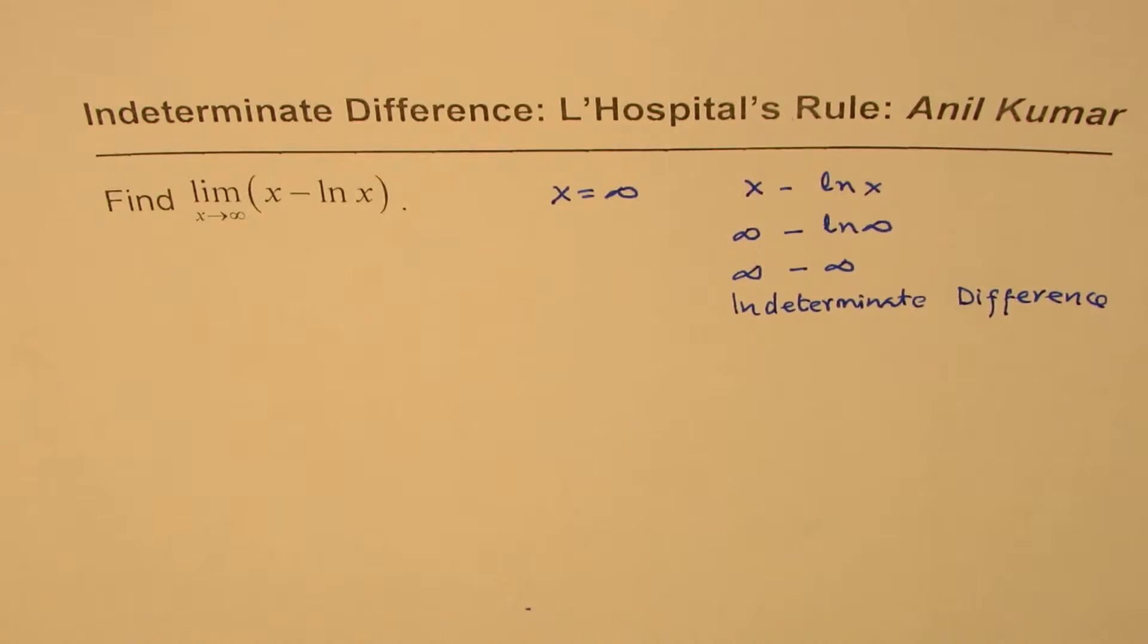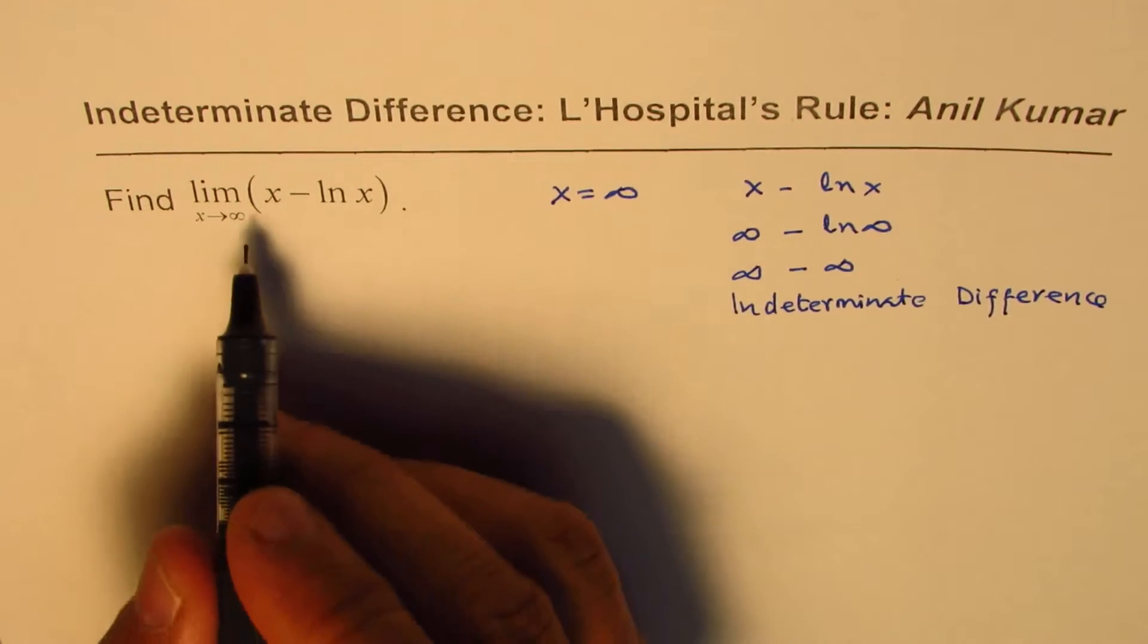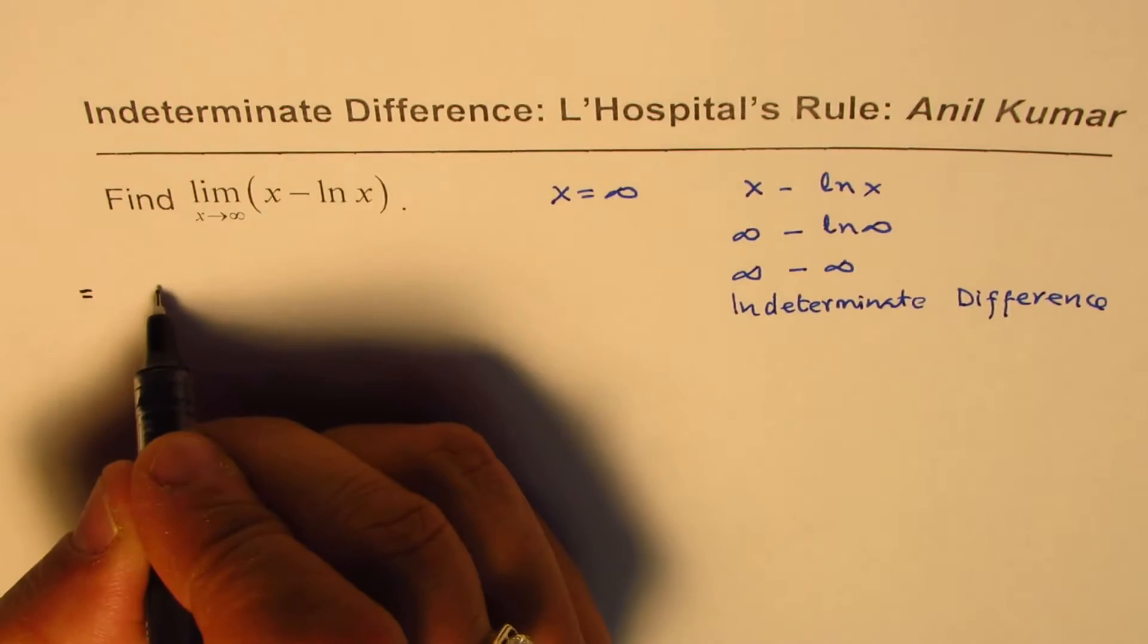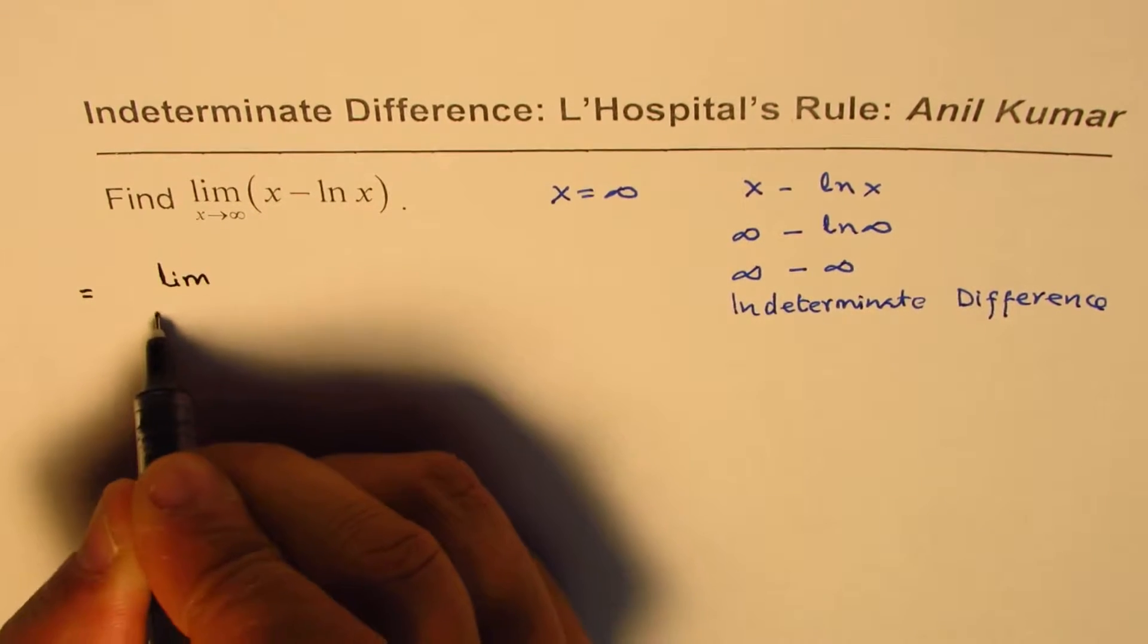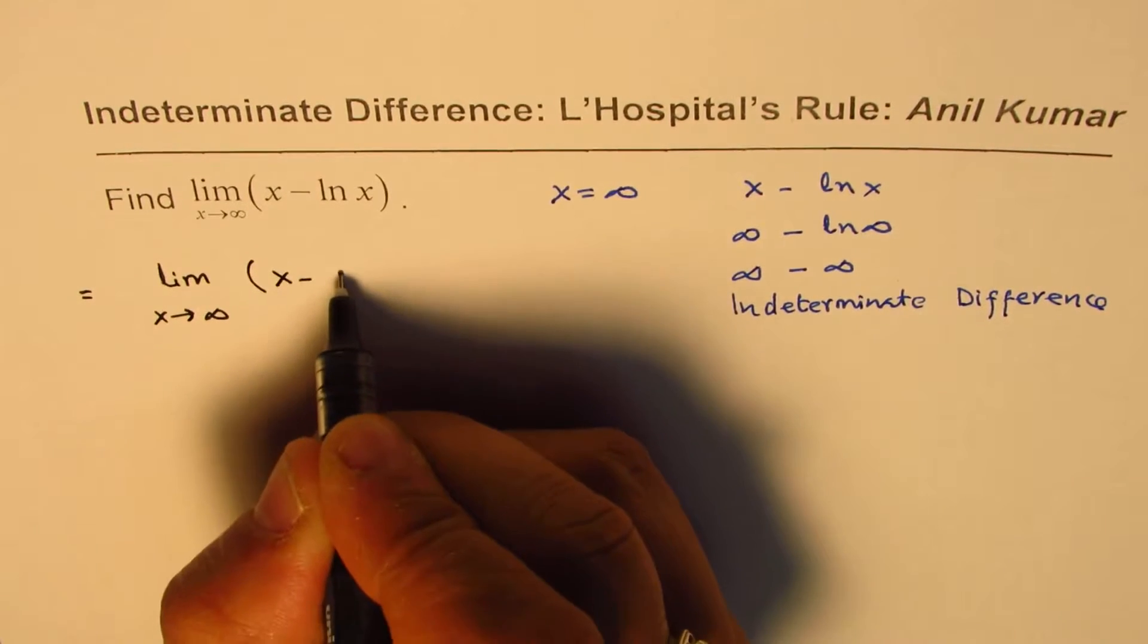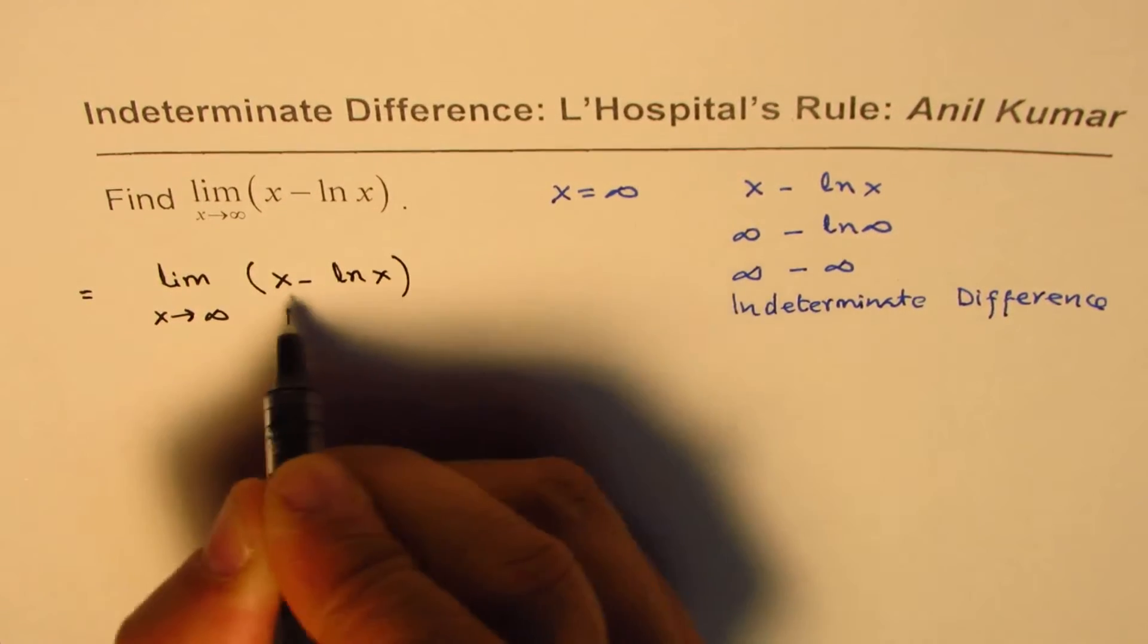Whenever you want to apply the rule, it's good to write this as a quotient. The question given to us is limit x approaches infinity for x minus ln x.